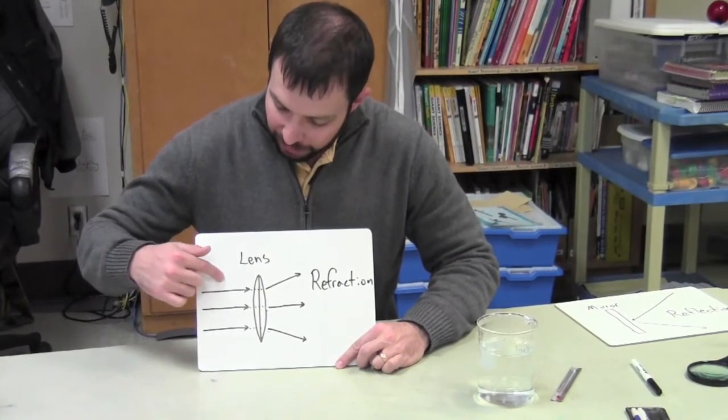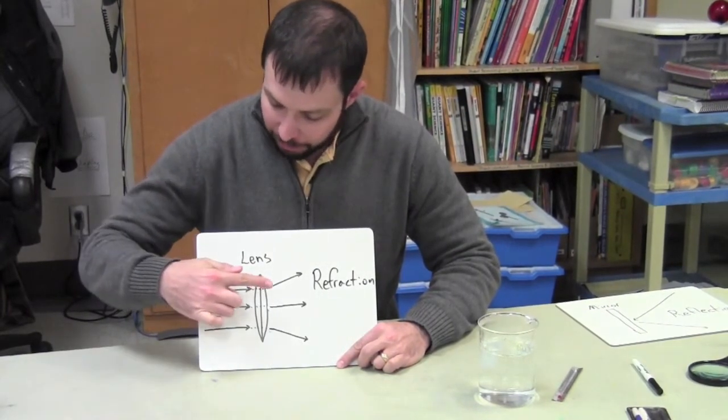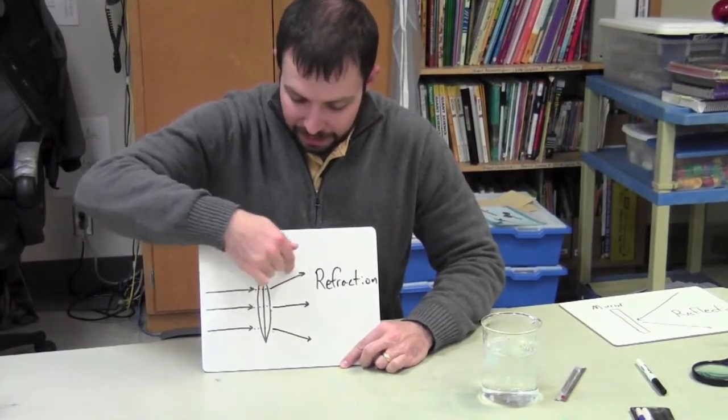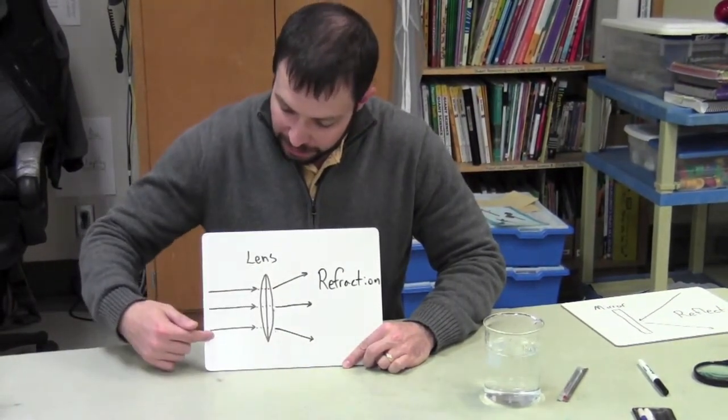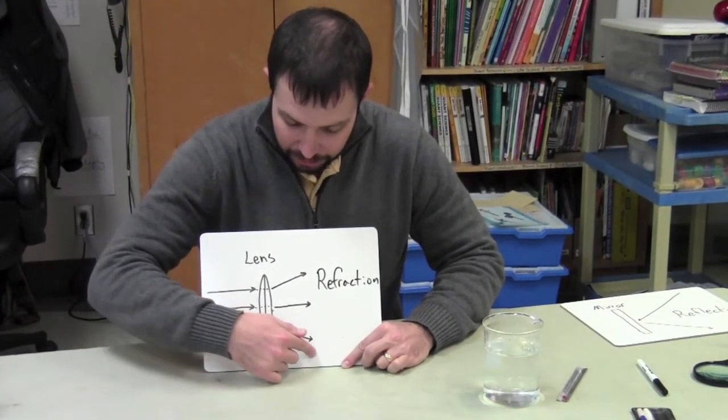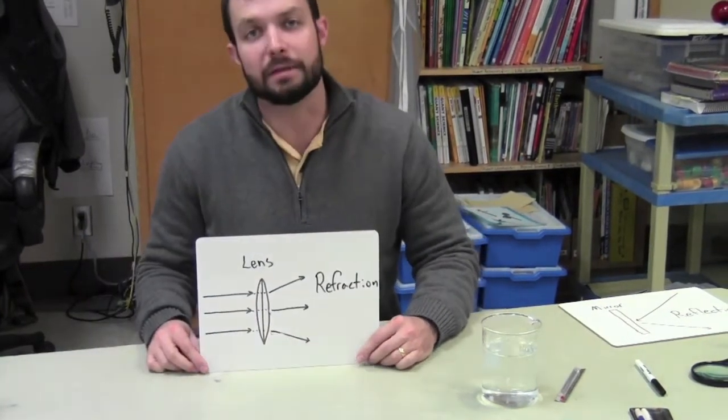So for example, the light ray on top will come in parallel or perpendicular to the lens and will be bent and come off this direction. Same thing with the one on the bottom. It will come in perpendicular to the lens and will bend going down. So refraction is the bending of light.